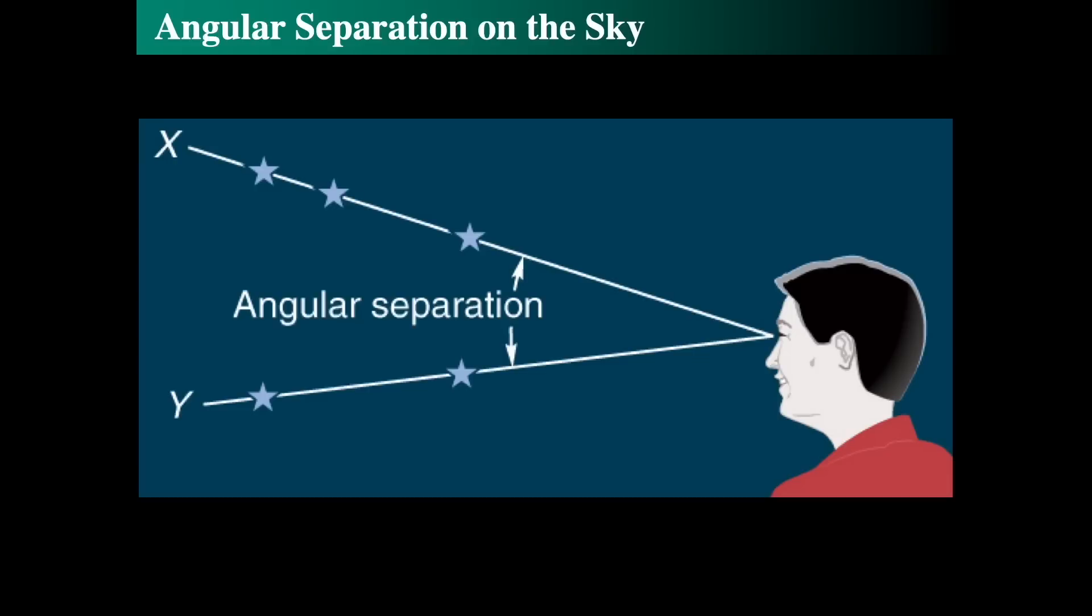Our next step is to look at the angular separation on the sky. If we have two directions, say direction x and direction y, it doesn't matter how far a star is away. We don't care about the distance to the object for angular separation. We only care that we're looking in one direction or another. This angular separation is only on the sky, and has nothing to do with the physical distance.